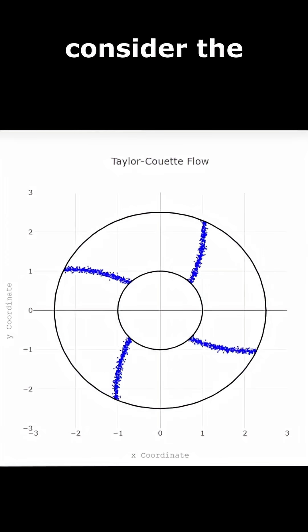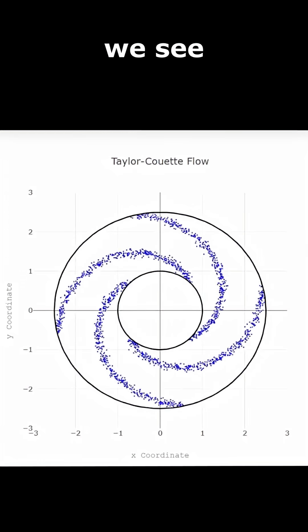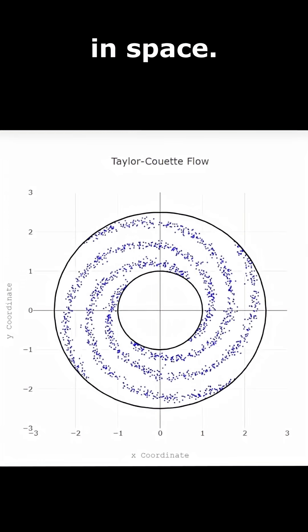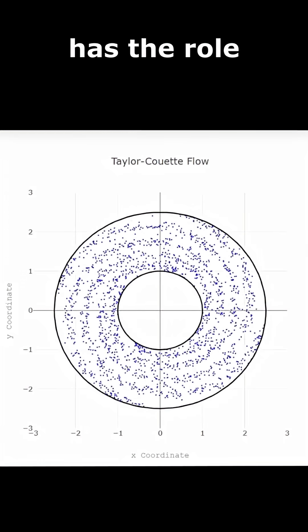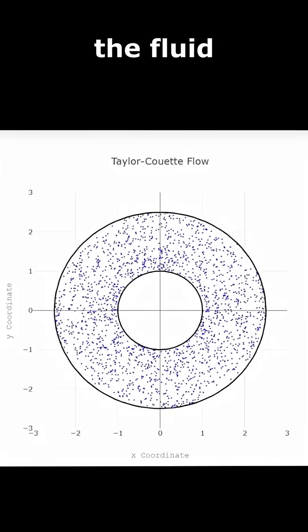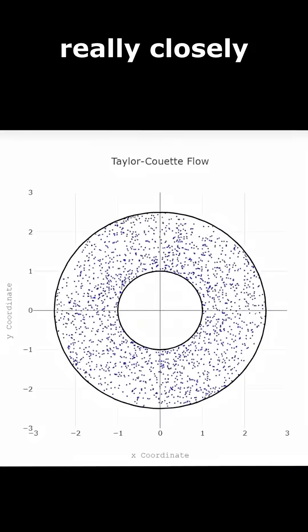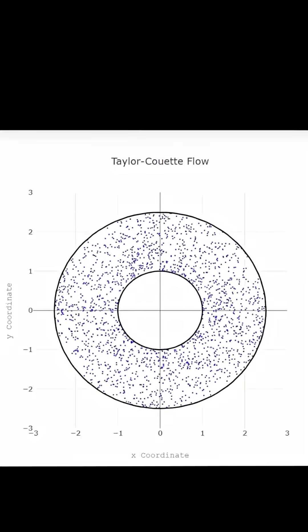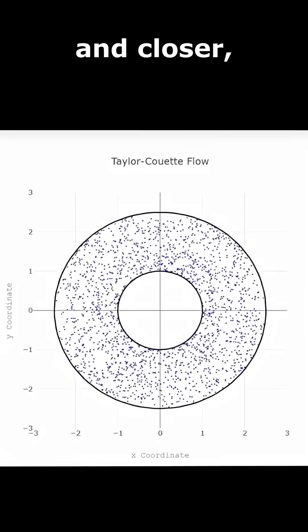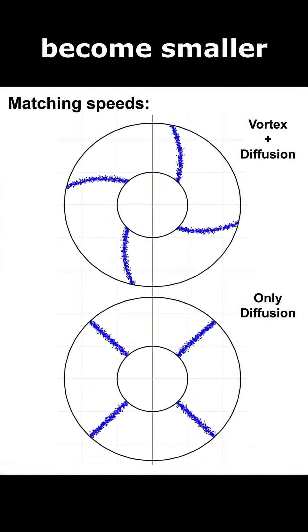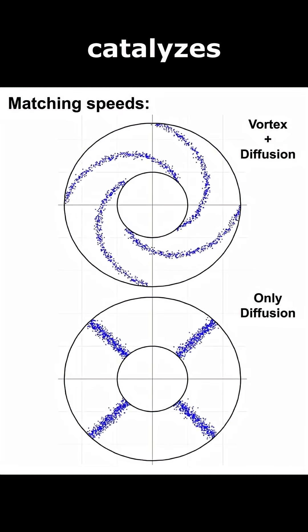So, when we consider the effect of molecular diffusion, we see that the dye can spread in space. But the vortex has the role of bringing different regions of the fluid very close together by winding them so many times that they become really closely packed. As the sheets get closer and closer, the timescales of diffusion become smaller and smaller, which catalyzes the mixing.